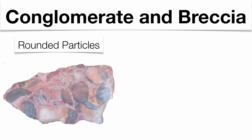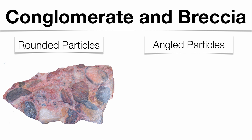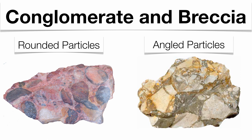Looking at conglomerate on the left and breccia on the right, you see significantly different appearances. The rock fragments in conglomerate have been rounded considerably, compared to the angular fragments in breccia. The rounded fragments in conglomerate probably traveled a further distance and have undergone the weathering and erosion process for a much longer period of time.